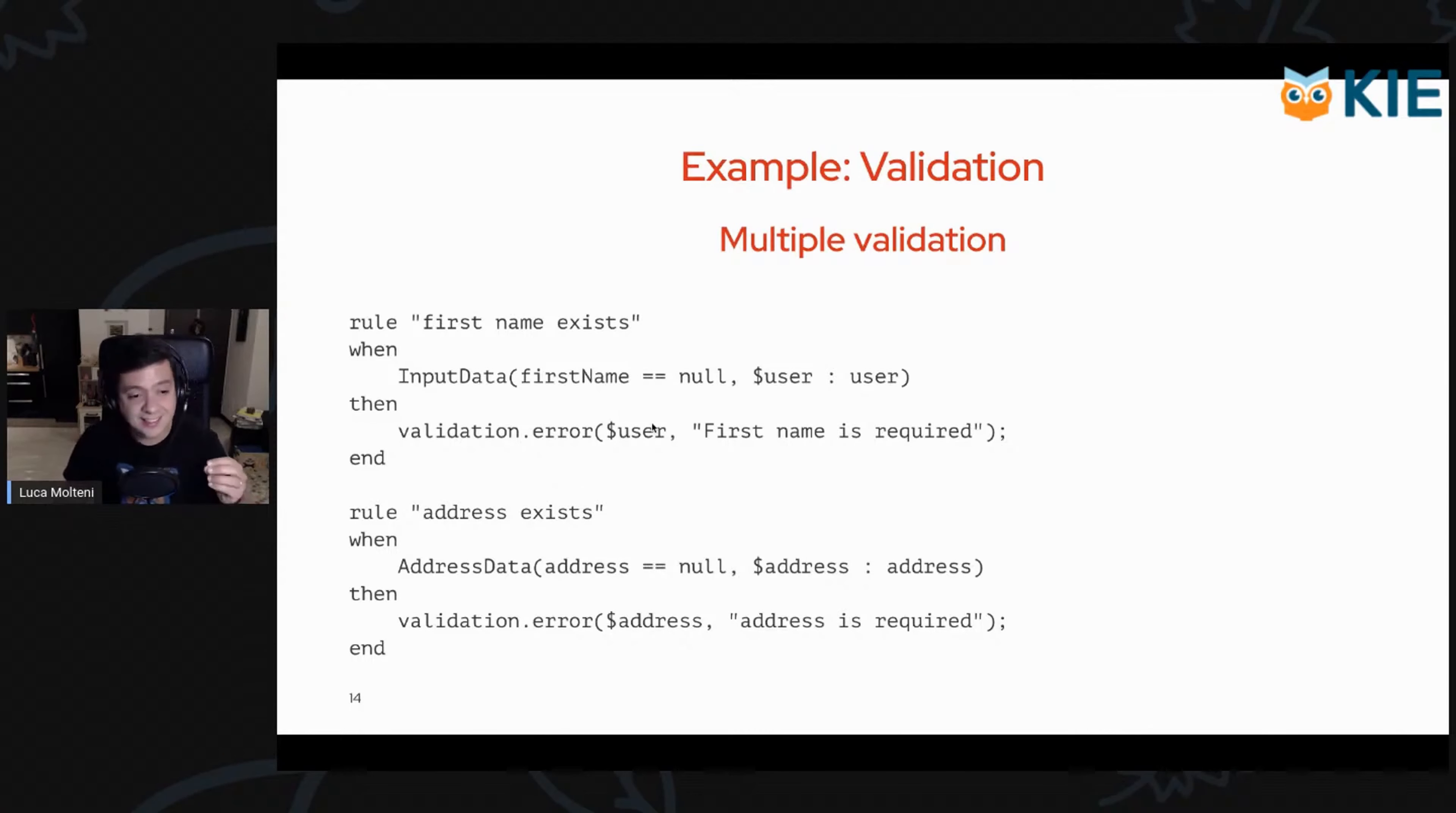The rule engine guarantees that the order of execution is correct and that it will evaluate our rules in the fastest way possible. This is a great advantage because the algorithm underneath is very, very fast.